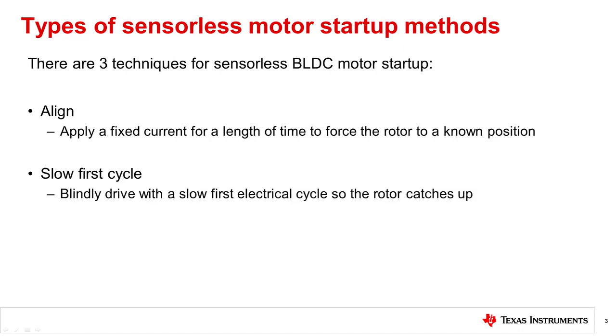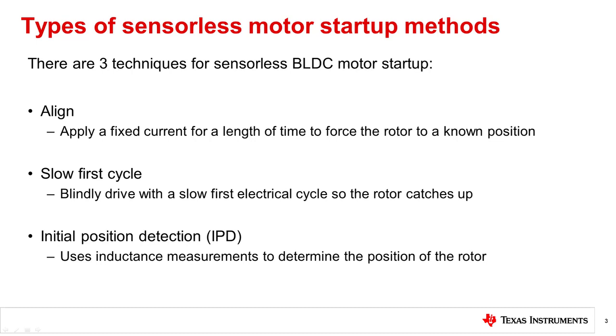The second technique is called Slow First Cycle. This is similar to the Align method in that the rotor is forced to a known position using an Align vector. However, in this case, a slow-and-moving, rotating Align vector is driven for one electrical cycle, and the rotor catches up with the rotating vector at some point along the first cycle. Last but not least is Initial Position Detection, also known as IPD. It is an algorithm that detects the position of the motor by applying current pulses on each phase and measuring the time interval for the pulse to reach a user set threshold, which determines the initial rotor position without moving it by taking advantage of the varying inductance of the three motor phase windings due to the rotor position.